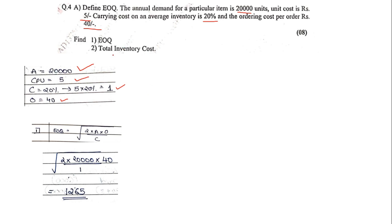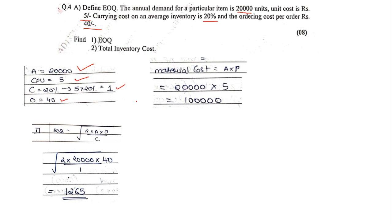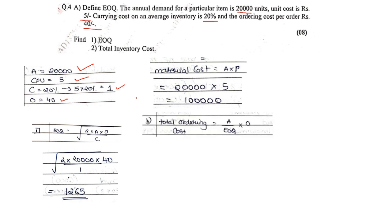Now we need to find the total inventory cost. For that we require three things. Number one, material cost = annual demand into cost per unit = 20,000 into 5 = 1,00,000 rupees. Number two, total ordering cost = annual demand upon EOQ into O = 20,000 upon 1265 into 40 = 632 rupees.